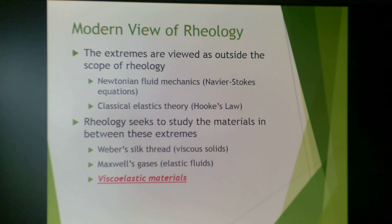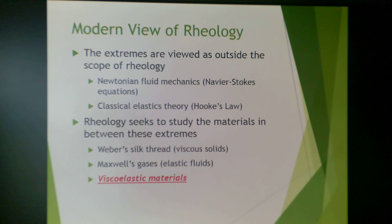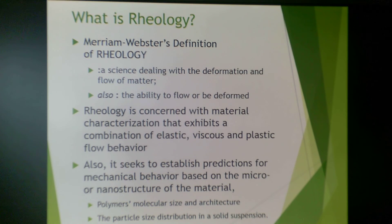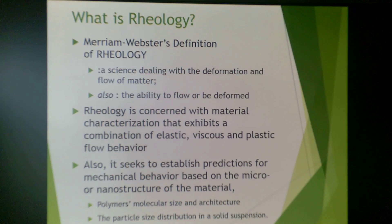In the modern view of rheology, the extremes — Newtonian fluid mechanics governed by the Navier-Stokes equations, and classical elasticity theory governed by Hooke's Law — are viewed outside the scope of modern rheology. Modern rheology seeks to study materials that fall between these extremes, such as Weber's silk thread (a viscous solid) and Maxwell's elastic fluids — these are considered viscoelastic materials. Rheology is concerned with material characterization exhibiting a combination of elastic, viscous, and plastic flow behavior, and seeks to establish predictions for mechanical behavior based on micro- or nanostructure, governed by polymer molecular size and architecture, as well as particle size distribution within a solid suspension.